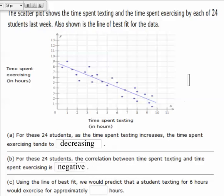And lastly, they want us to know, using the line of best fit, we would predict that a student texting for six hours would have exercised for approximately blank hours. So if we come through here, and we draw a line up through six hours, and then we draw a line. Now we're using the line of best fit, we don't want to use the point, okay?